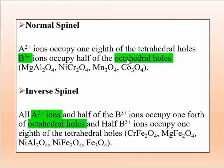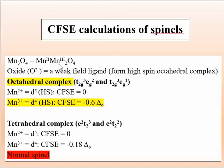On the basis of CFSE, we can suggest the type of spinel — whether it is normal or inverse. Examples of normal spinels are MgAl₂O₄, NiCr₂O₄, Mn₃O₄, and Co₃O₄. Examples of inverse spinels include CrFe₂O₄, MgFe₂O₄, NiAl₂O₄, NiFe₂O₄, Fe₃O₄, and many others.